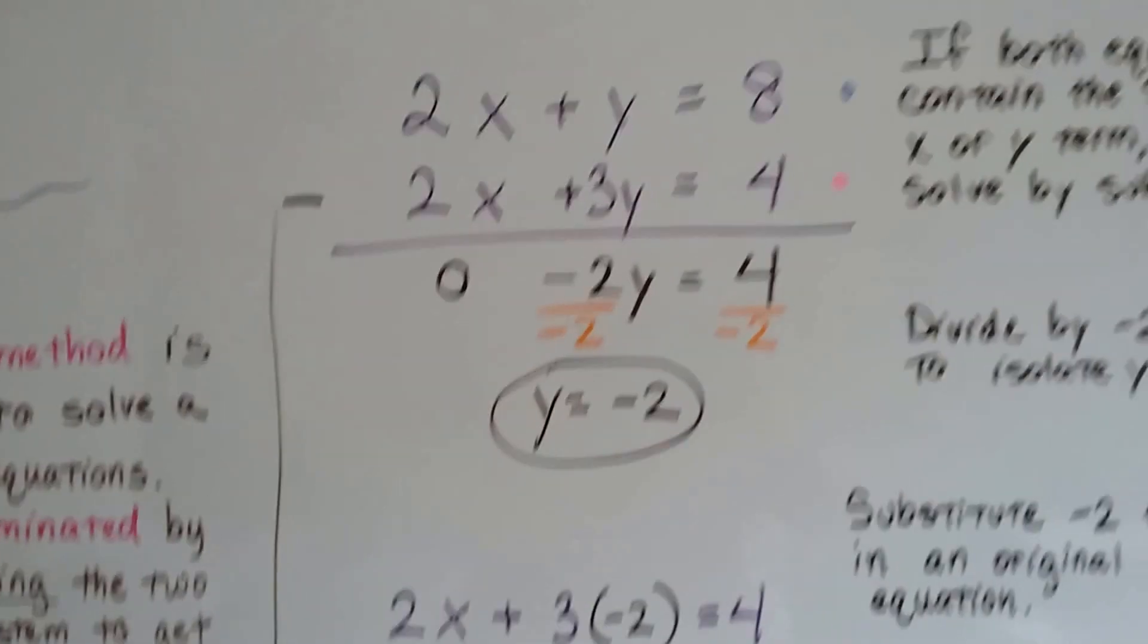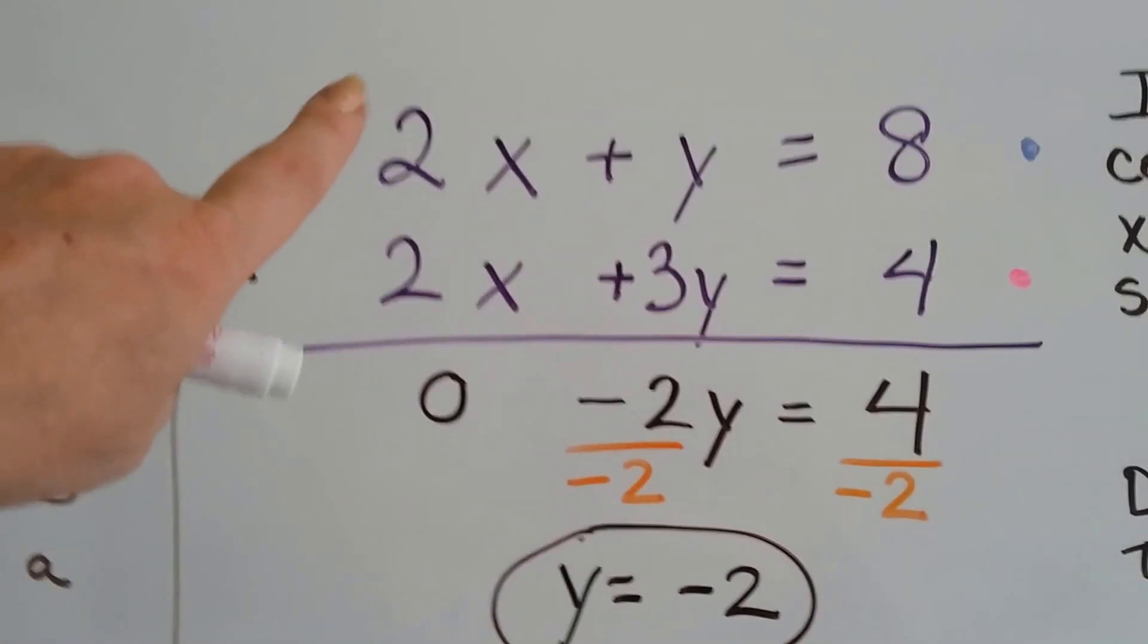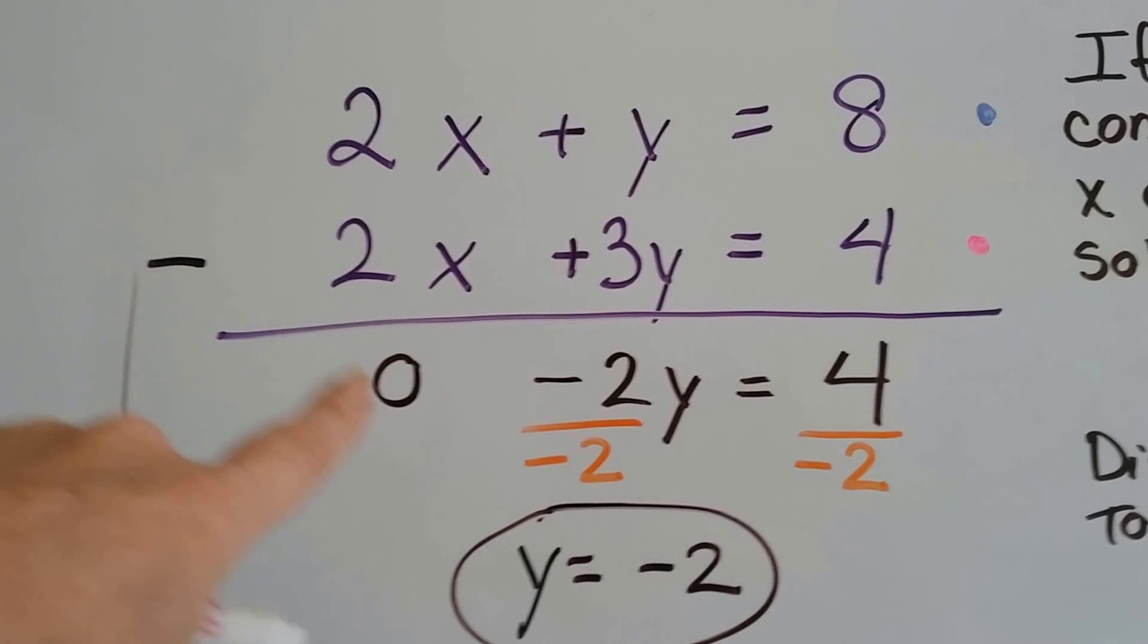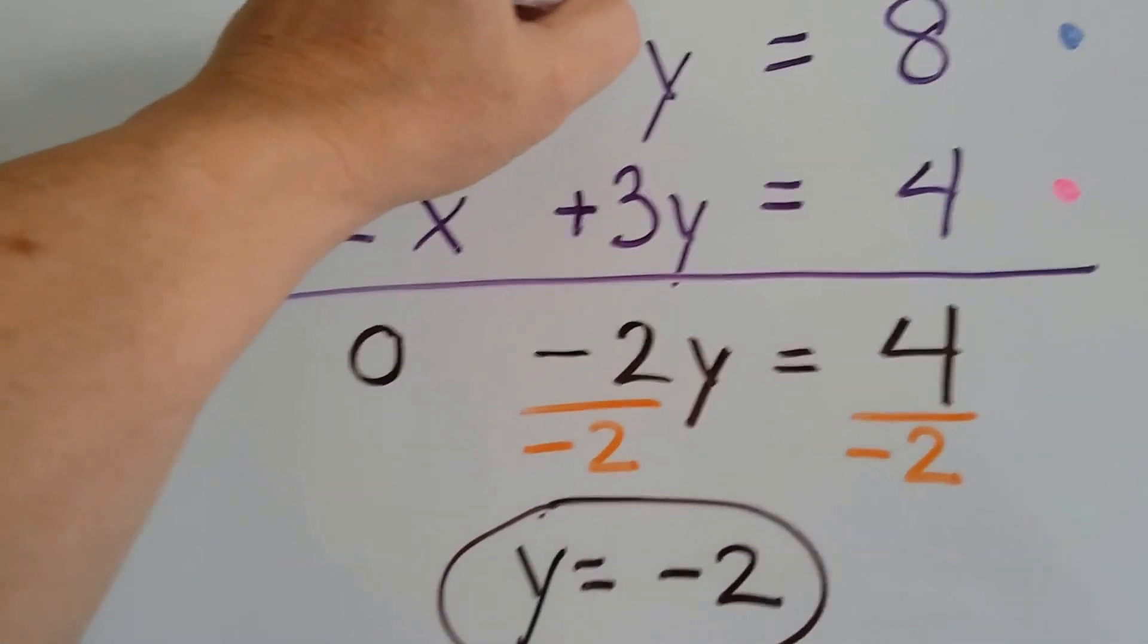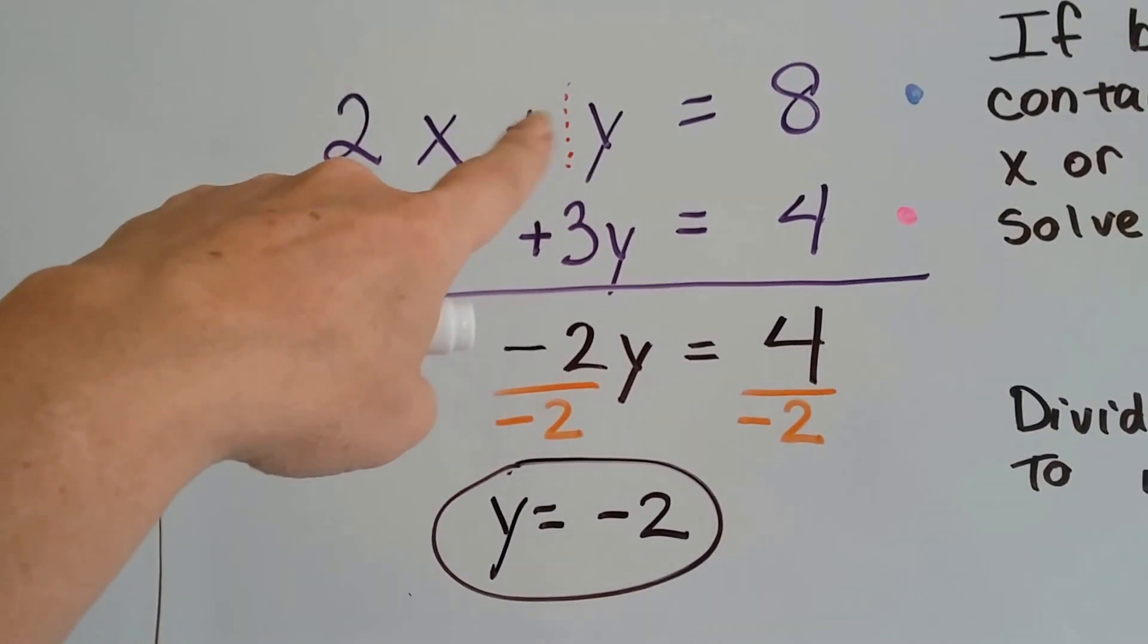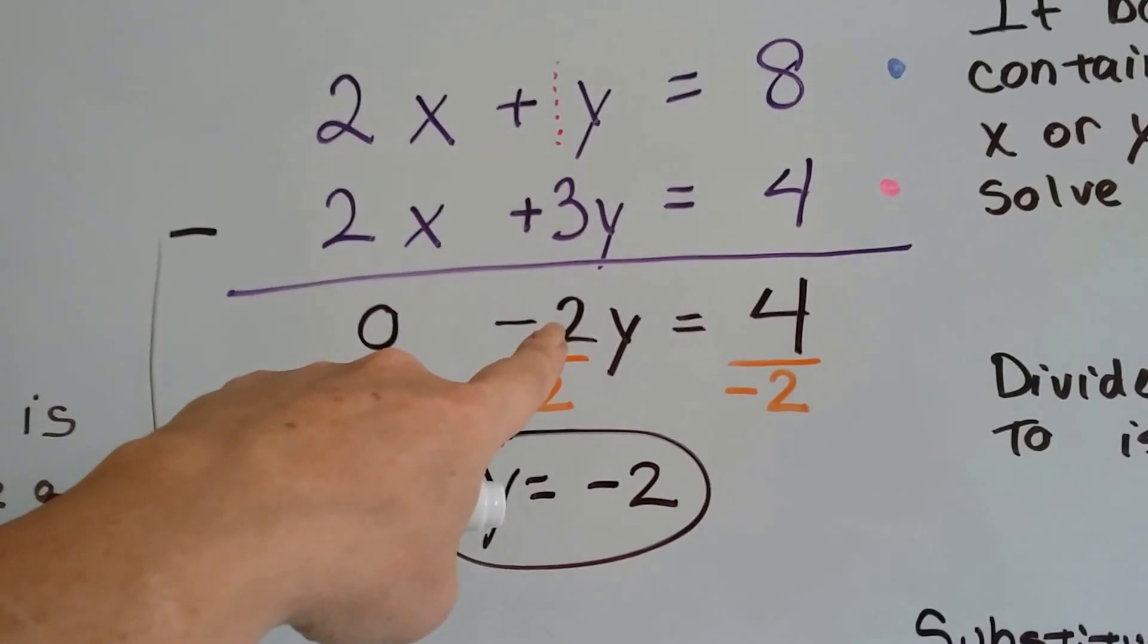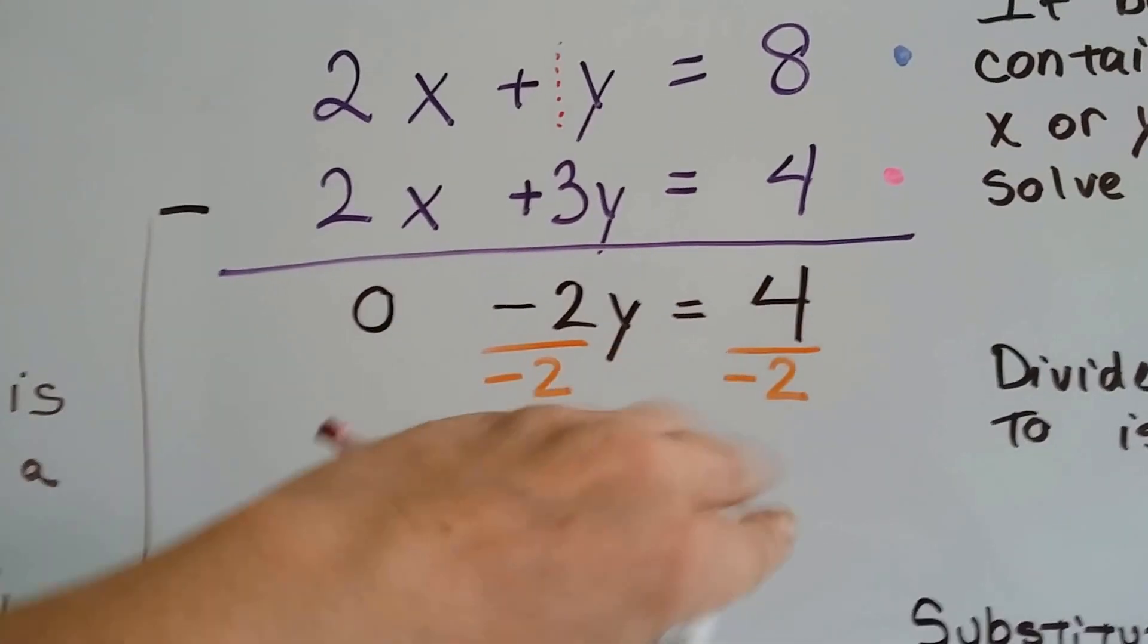Here we've got a system of equations, and we can see that they both have a positive 2x. So we're going to subtract. Positive 2x take away positive 2x gives us zero. And if we have, remember this is our friend the invisible one, if we have one y and these are both positive, if we have a positive 1 and we take away 3, that's going to give us a negative 2. It's going to put us past zero to a negative 2, and 8 take away 4 is 4.